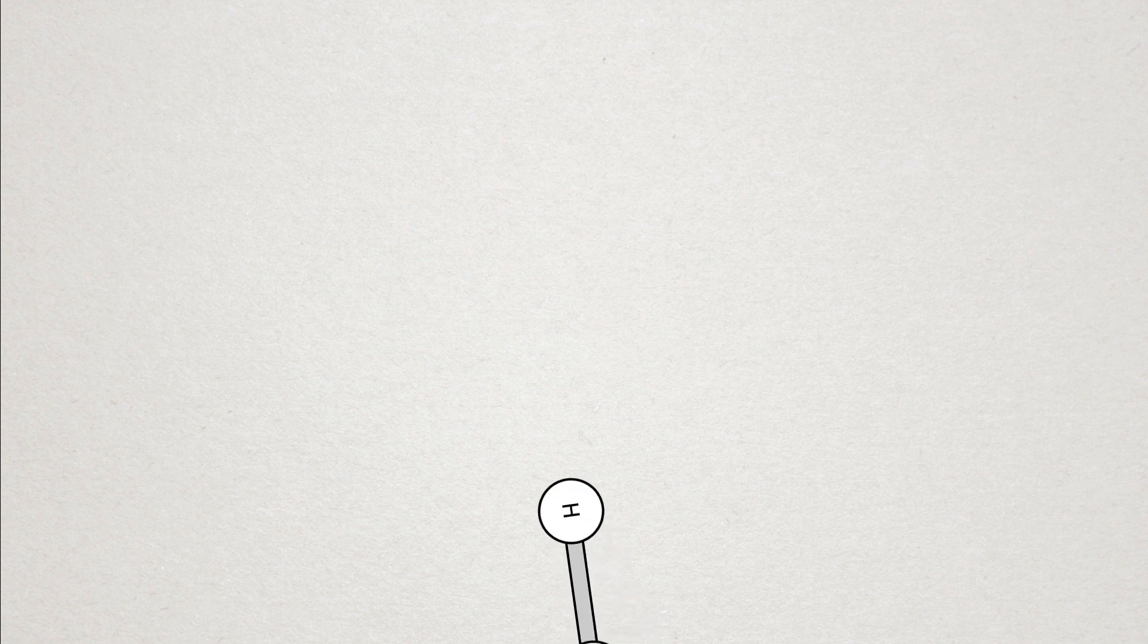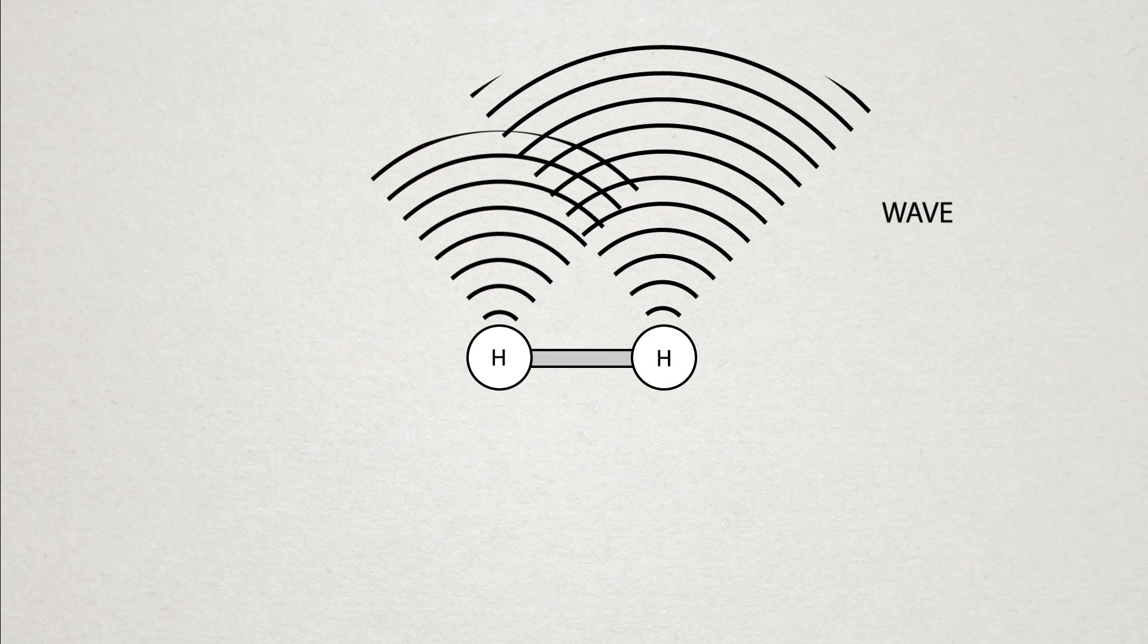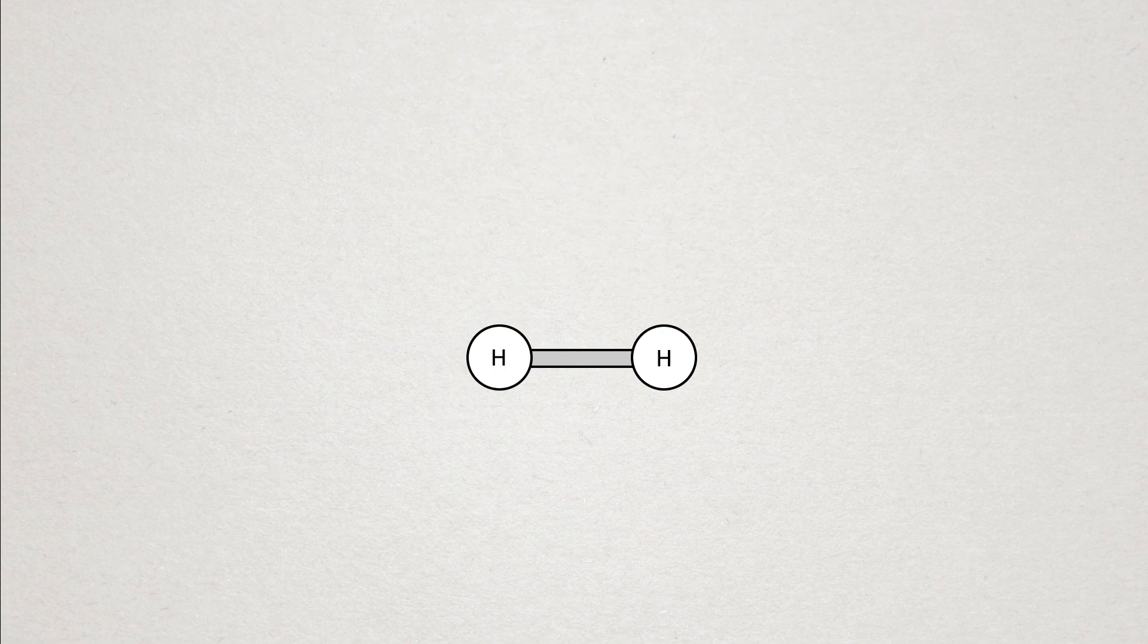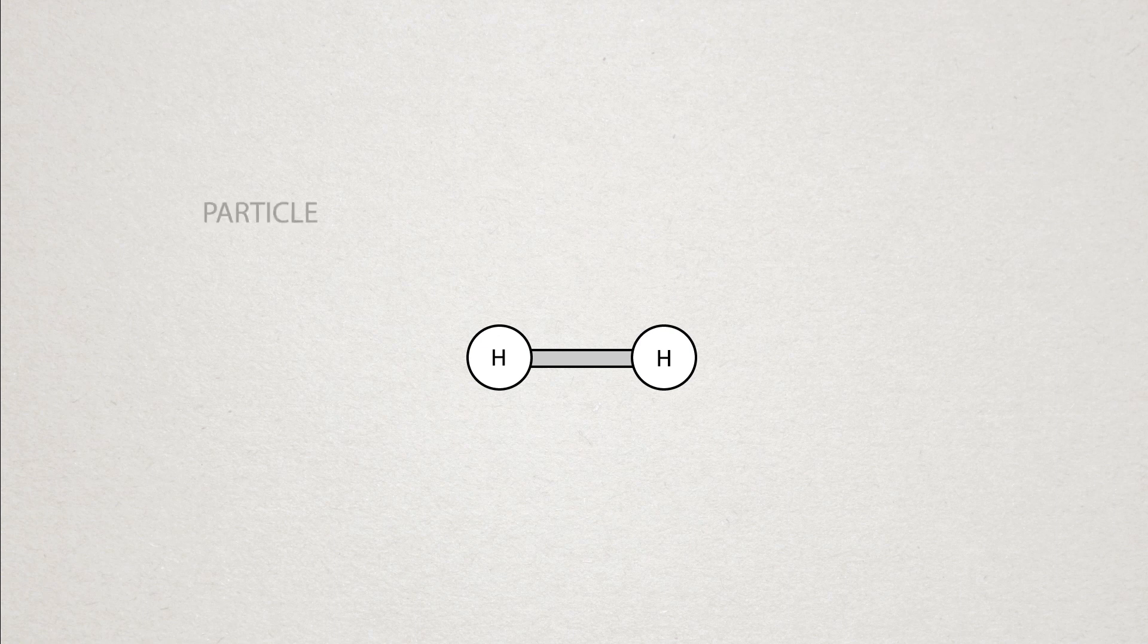The scientists used this light and shone it on hydrogen molecules. They took these molecules and positioned them such that the light would hit one atom before the other. They also chose the energy of the light such that there was just enough energy to give two electrons the energy they needed to escape the atoms that they were bound to.